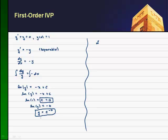y prime plus y equals 0, and take the Laplace transform of the entire DE. I'll do it on the left side and the right-hand side. The Laplace transform of 0 is just 0 on the right-hand side.